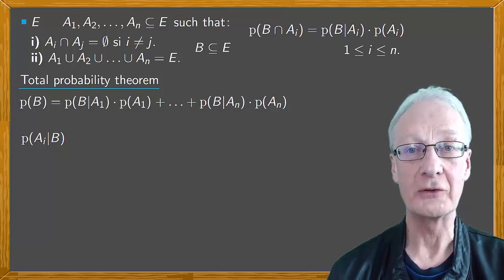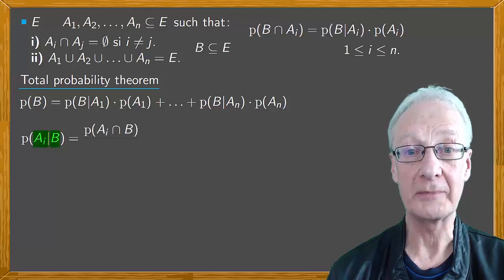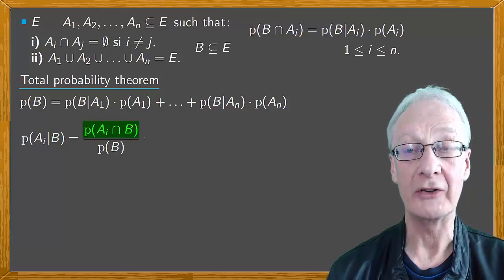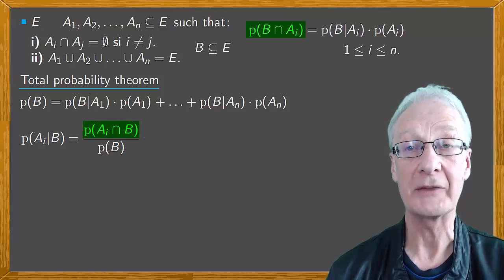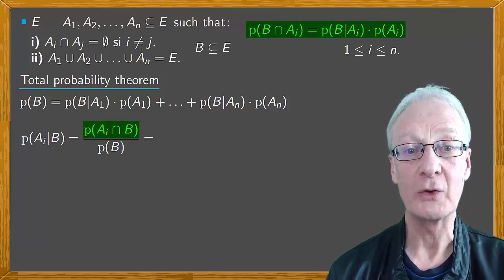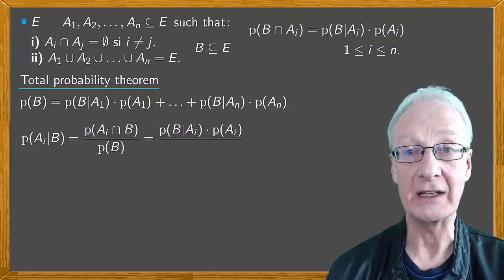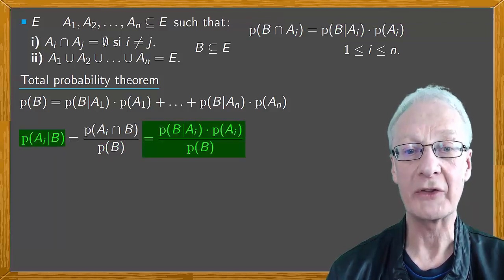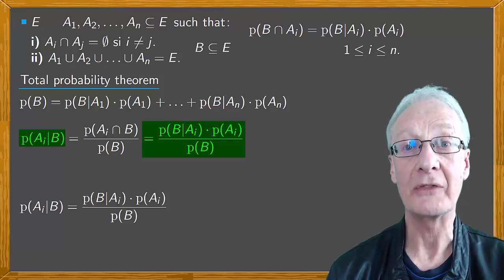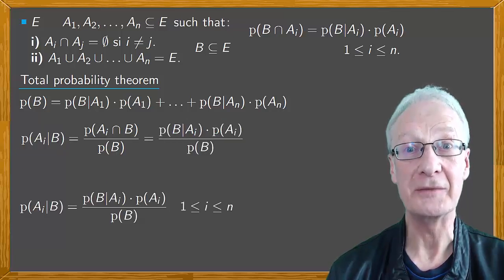Using the conditional probability formula, this would be the probability of the intersection divided by the probability of B. We had the probability of Ai intersected with B, which is the same as B intersected with Ai. Substituting the expression obtained previously, this is the probability of B conditional on Ai times the probability of Ai, divided by the probability of B. Considering the equality of the first and last member of this chain of equalities, this is Bayes' Theorem.